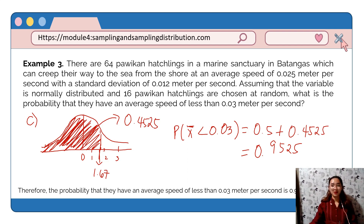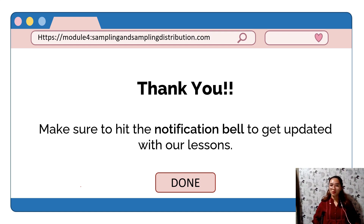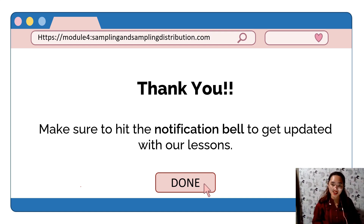So that's all about the Central Limit Theorem. Remember: it follows a normal distribution, so when finding the probability of the sample mean, we use the z-value and the z-table. The Central Limit Theorem applies to infinite populations, so we use the theorem of infinite population to estimate sample statistics, as discussed in the last video. Thank you for listening — make sure to hit the notification bell to get updated with our lessons!